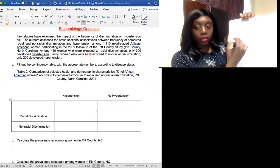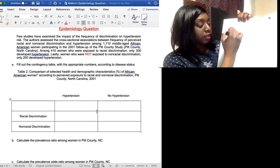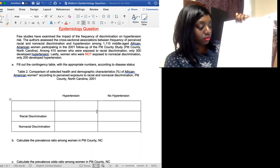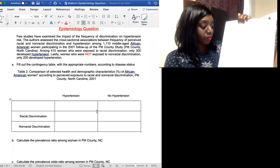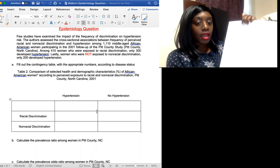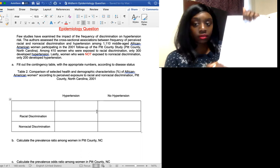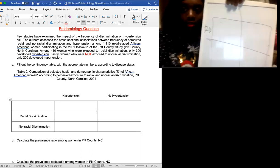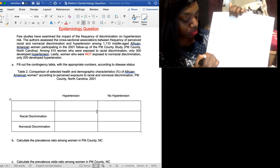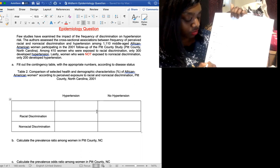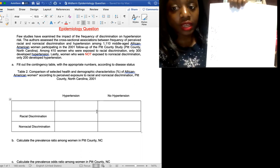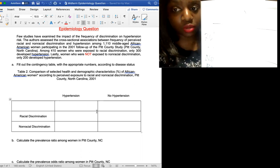So this is a two by two table that I'm going to draw out like this. And then over here we're going to have it as racial discrimination. Hope you all can see this. And no racial discrimination. And then we're going to fill out the appropriate numbers.